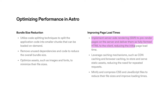To clarify, what that means is that it improves page load time. It pre-renders pages on the server and delivers them to the client, reducing the initial page load time. The more you work with Astro on your own projects, the more you'll understand this — similar to how you work with other frameworks like Next.js.